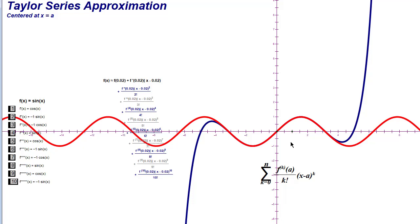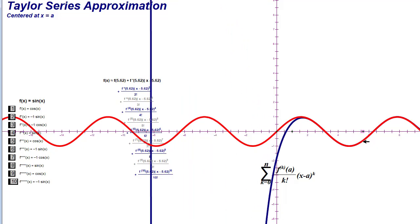So what's a better way? What would be a more efficient way of approximating the sine of 8? If I could move the center, instead of centering everything at zero, I could center it somewhere closer to 8.